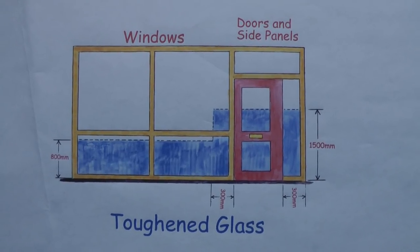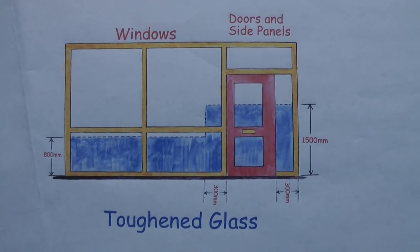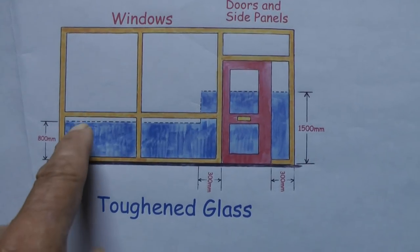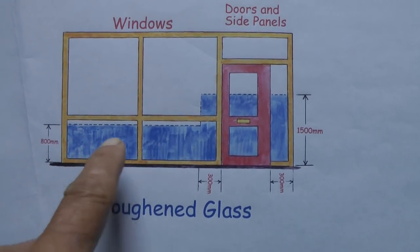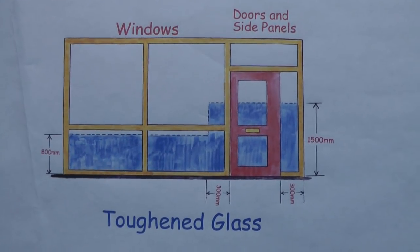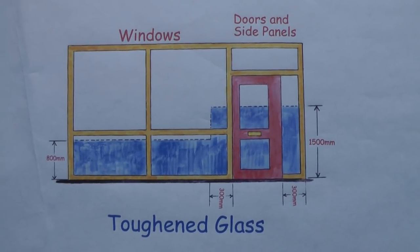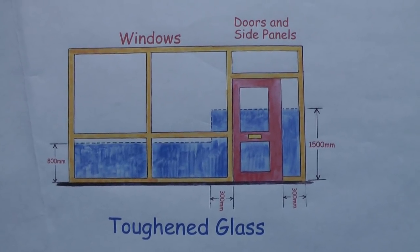The next photograph illustrates that quite well, and this little diagram shows you where you need toughened glass — these blue areas here. I think it's self-explanatory.